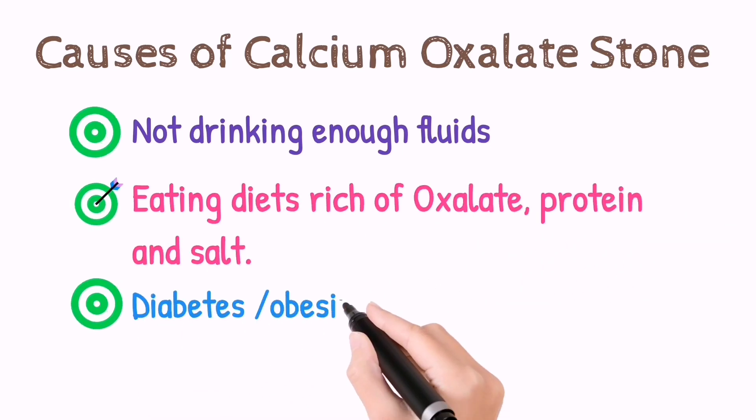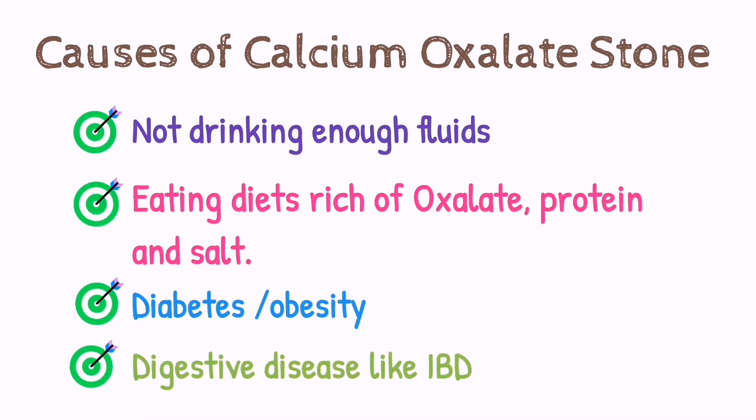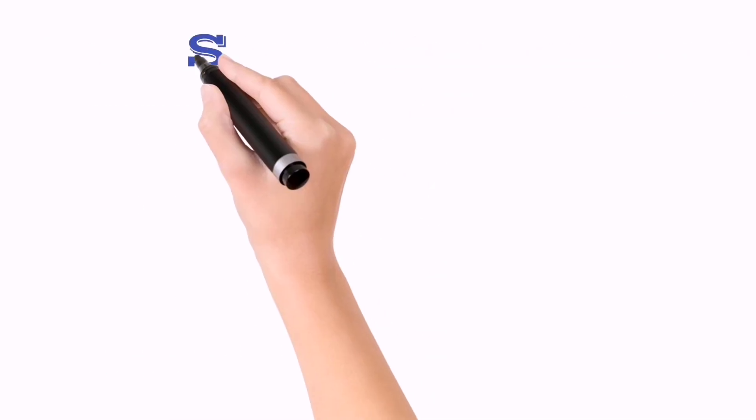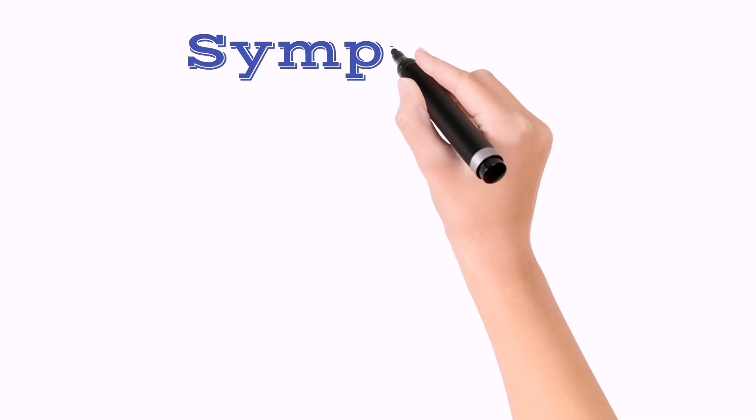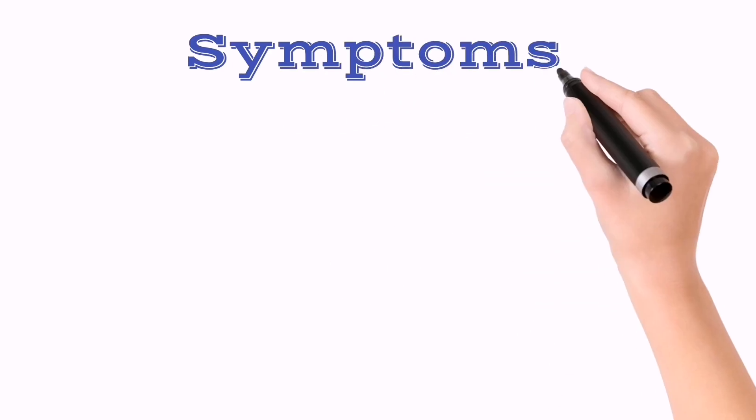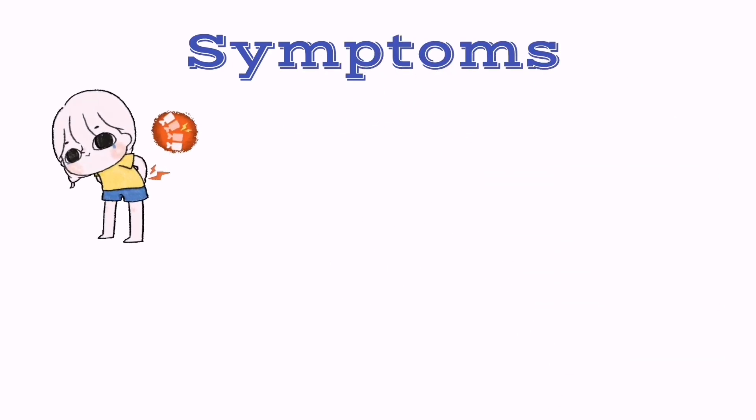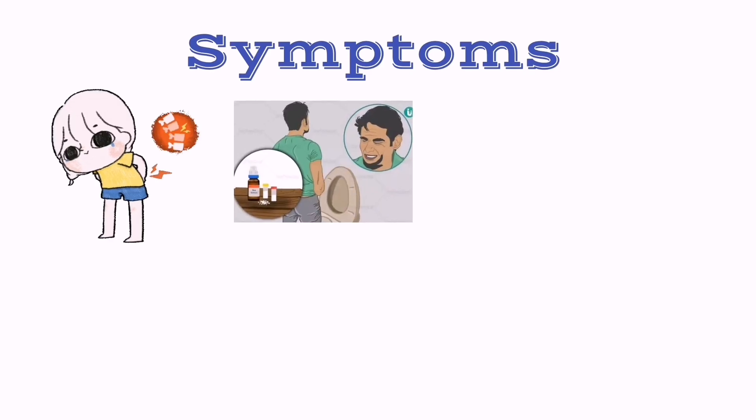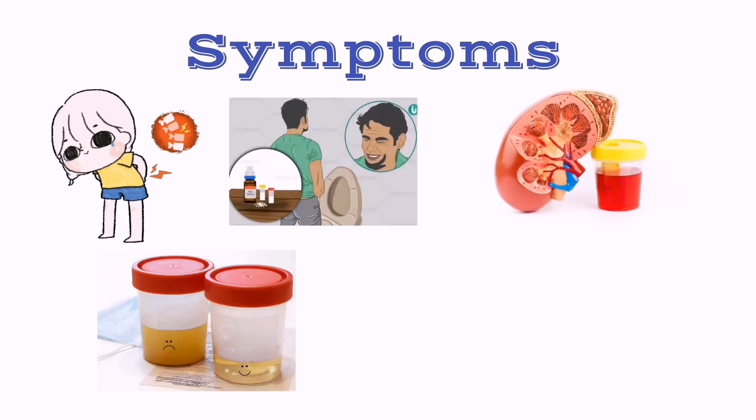Persons feel symptoms when they have calcium oxalate stones. It might be pain in the back, pain when urinating, blood in urine, cloudy urine, nausea, and vomiting.